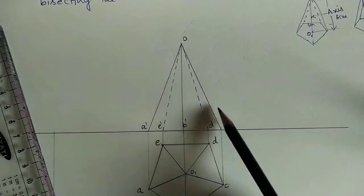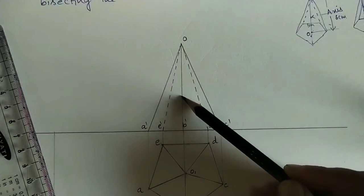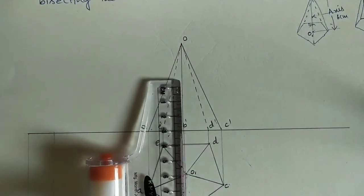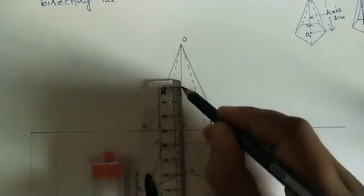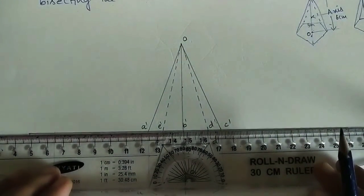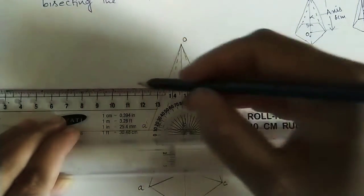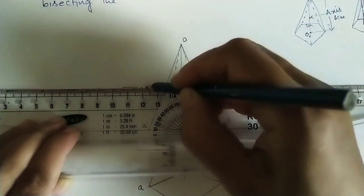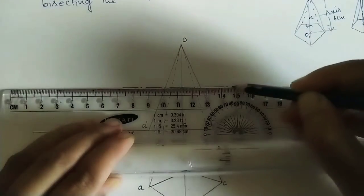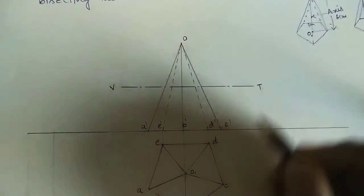This is the front view and this is the top view. The section plane cuts the axis at the middle — height is 60mm so the midpoint is at 30mm from the base. Mark this midpoint. A horizontal section plane appears as a horizontal line here. Mark the section plane with two big lines with a dot (standard notation). Mark the endpoints V and T.